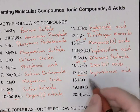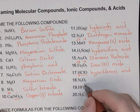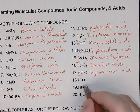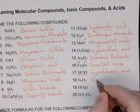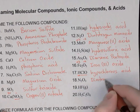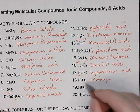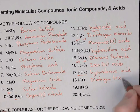N2O3 is a covalent compound again — two non-metal elements bonded to each other — so with prefixes in the name: dinitrogen trioxide.